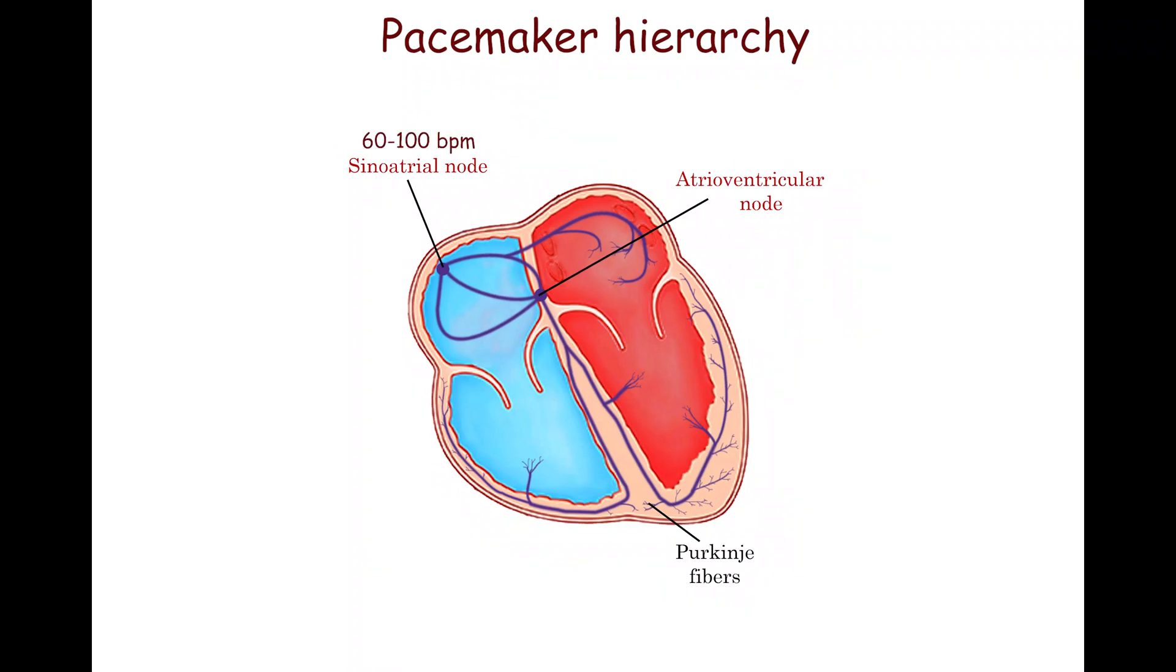The normal spontaneous depolarization rate of the AV node is 40 to 60 beats per minute. The ventricles can depolarize spontaneously at a rate of 20 to 40 beats per minute.